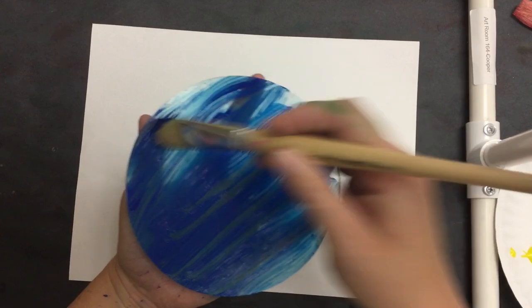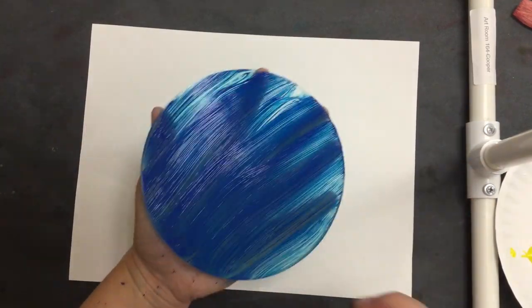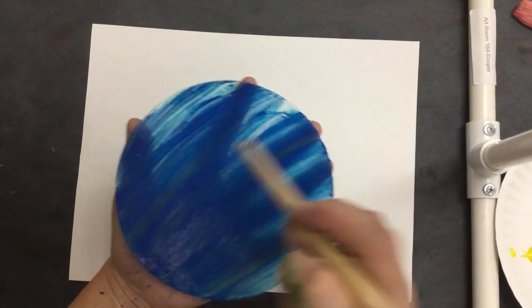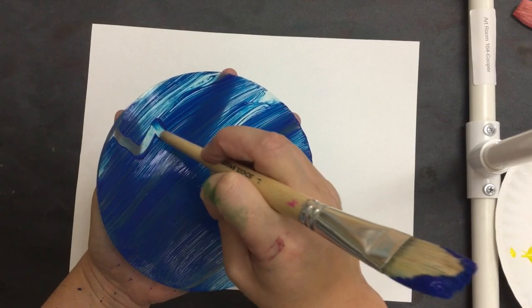Now here's where the fun begins - you make your design on the plate before you print it on your paper. You can turn your paintbrush around and draw some designs in it.